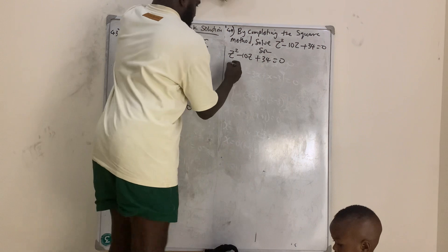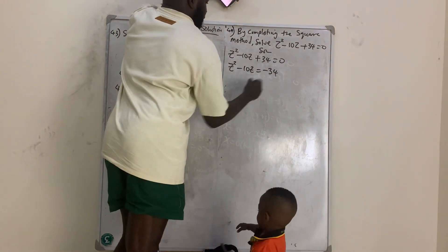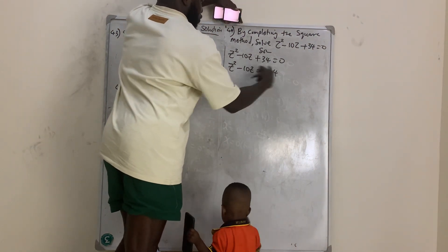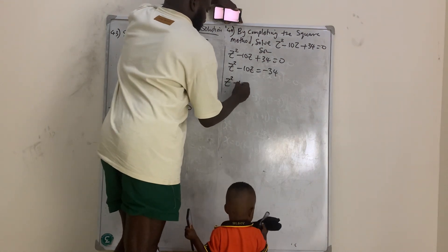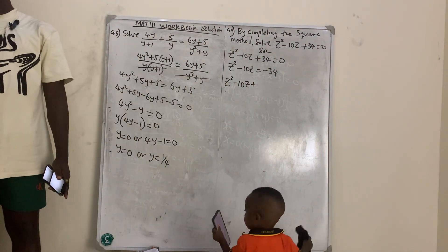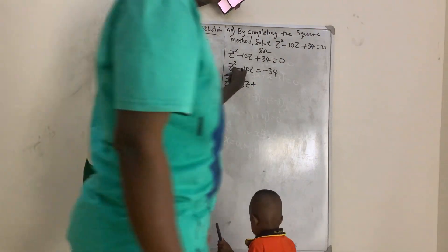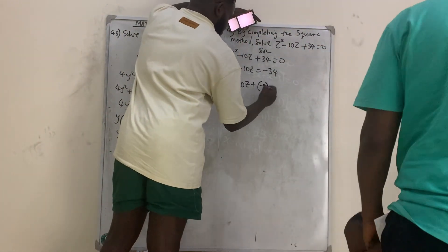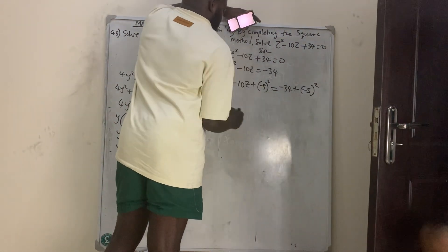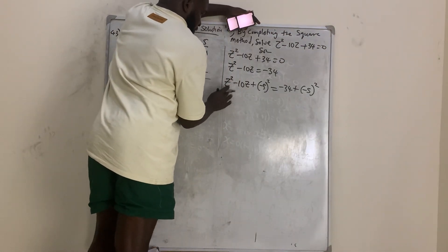Solution: z squared minus 10z plus 34 equals zero, so z squared minus 10z equals negative 34. Completing the square means finding half the coefficient of z, squaring it, and adding to both sides. Half of 10 is 5, so we add 5 squared to both sides: z squared minus 10z plus 25 equals negative 34 plus 25.